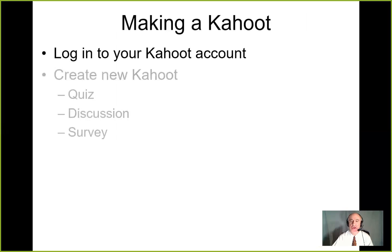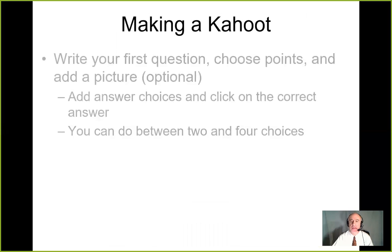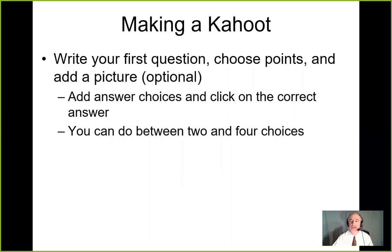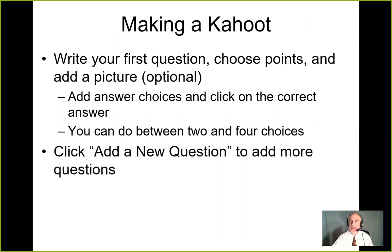To make a Kahoot, log into your account and click on quiz. Name your quiz, then write your first question. Choose how many points that question is worth and add a picture. You can add answer choices and click on the correct answer — you can have two, three, or four answer choices.